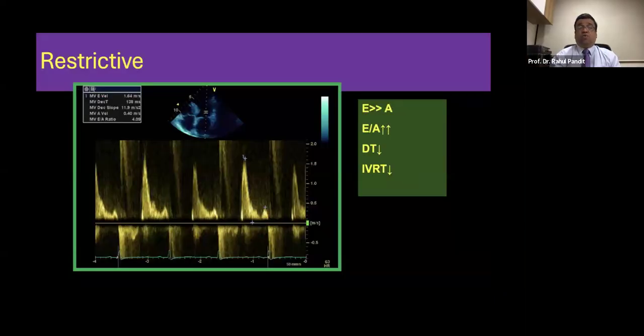And then as the heart becomes more and more stiffer, you go into a restrictive pattern. The left ventricle is stiff. The compliance is absolutely poor. The pressures in the left atrium are very, very high. So as soon as the diastole happens there, you have a large E wave which is very, very high.